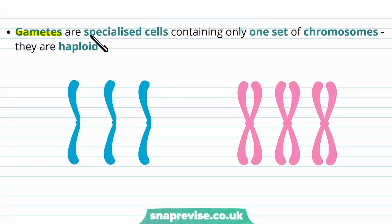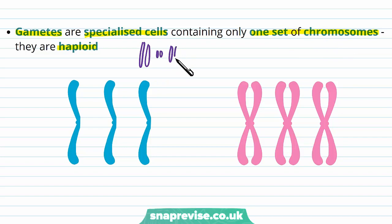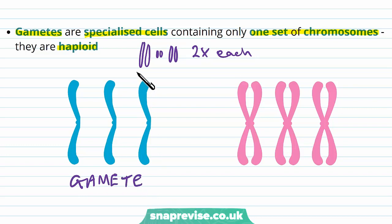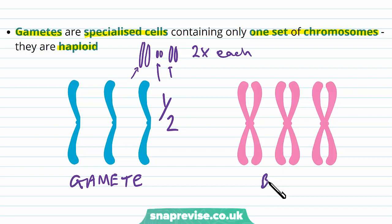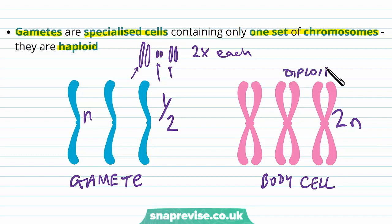Gametes are specialized cells and, unlike most body cells, contain only one set of chromosomes — we describe them as being haploid. Every individual has a certain number of chromosomes, and usually each chromosome has its own copy, so we tend to have two versions of each chromosome. But in a gamete, one gamete cell only has one copy from each of those pairs — it only has half the genetic material, which is why we call it haploid. In a normal body cell we have a pair of every type of chromosome, which we call 2N, and therefore diploid. So haploid is half, diploid is the full set of two for each pair.